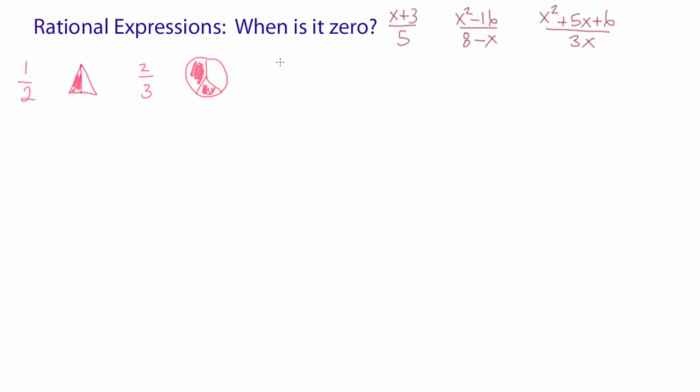Or for example, if you have zero over four, what does that mean? Well, you have four pieces but you don't shade any. What does that mean? The overall answer is zero.